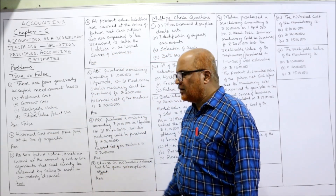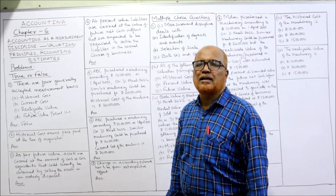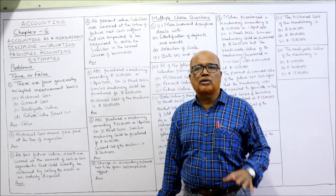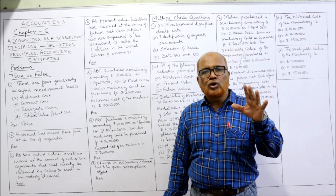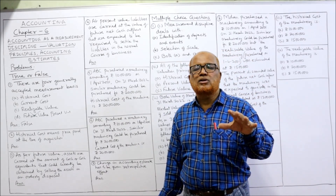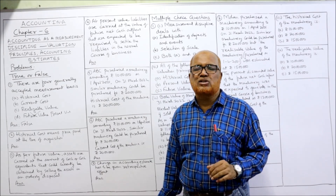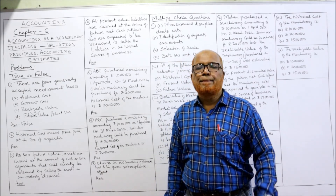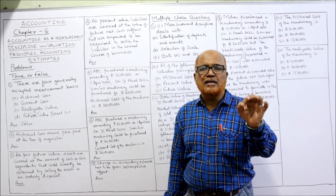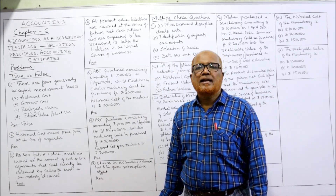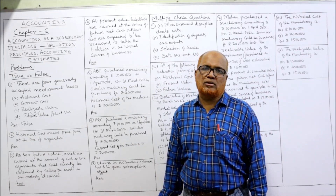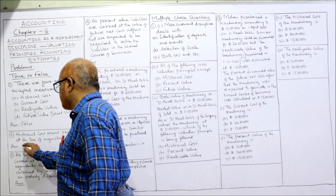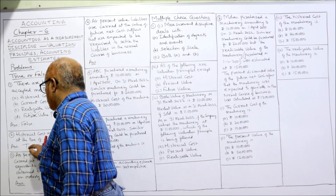Next: historical cost means the price paid at the time of acquisition. In the previous video I explained the different concepts — historical cost, current cost, realizable value, present value. Historical cost is the price paid at the time of acquisition of the asset, so this statement is TRUE.